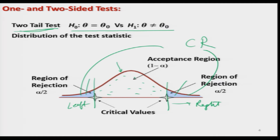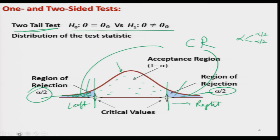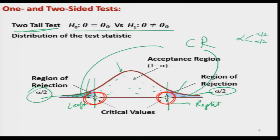The values on the x-axis that partition the total area into three regions are called critical values. They divide the distribution into acceptance and rejection regions. For a one-sided test with H naught: theta equal to theta 0 versus H1: theta greater than theta 0, the critical region lies on the right-hand side with area alpha. This is called the upper tail test or right tail test.